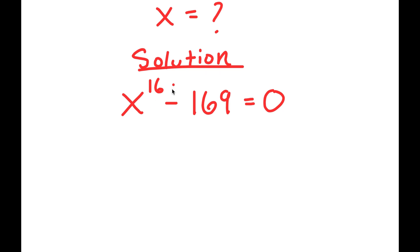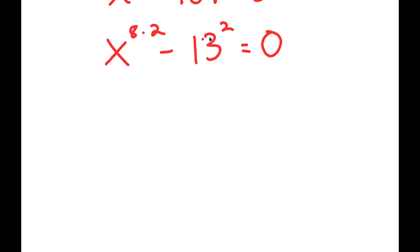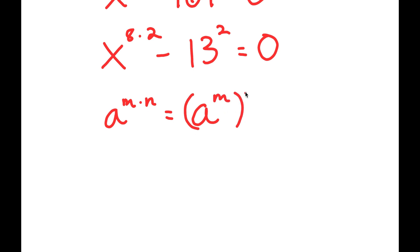I can rewrite x to the power of 16 as x to the power of 8 times 2, and I can rewrite 169 as 13 squared. The reason I rewrite x to the power of 16 as x to the power of 8 times 2 is because I can use the property that states a to the power of m times n equals a to the power of m to the power of n. So x to the power of 8 times 2 becomes x to the power of 8, to the power of 2.